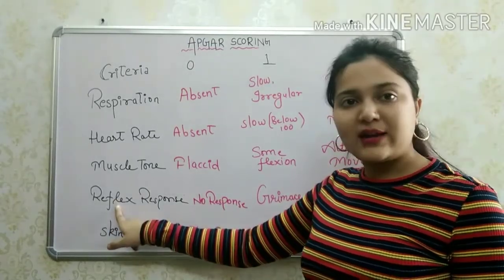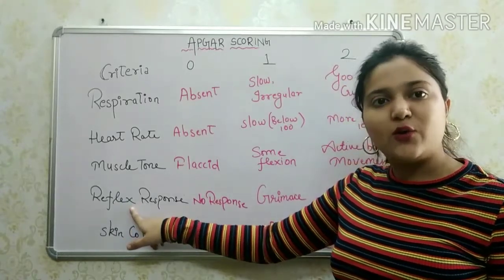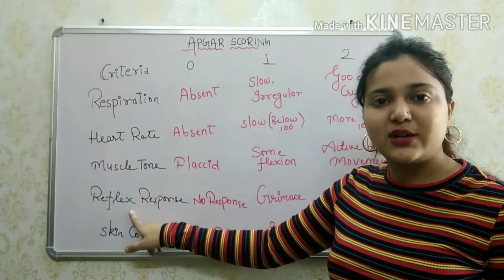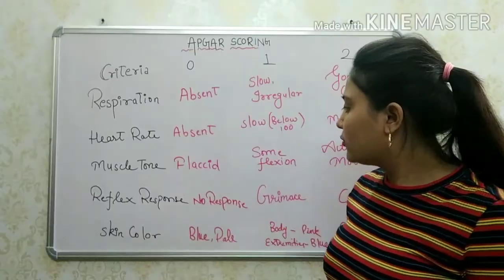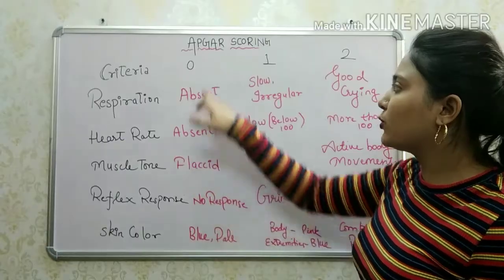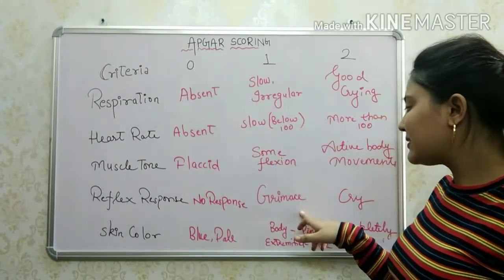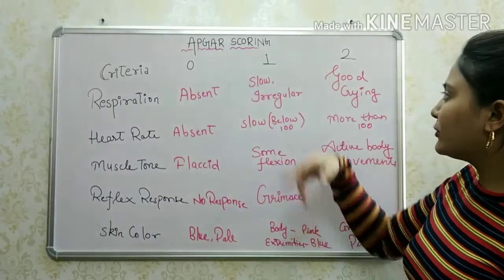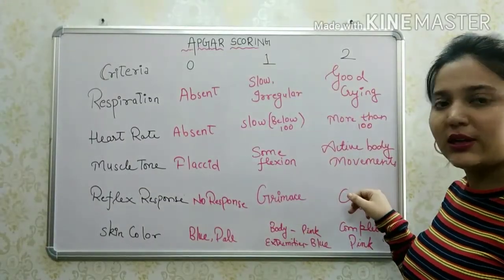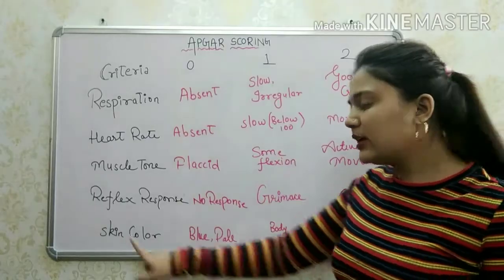For reflex response: if there is no response to stimulation, we score 0. If there is a grimace, we score 1. If the baby is crying, we score 2.